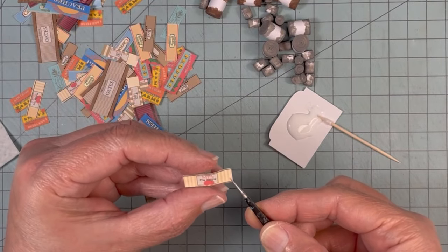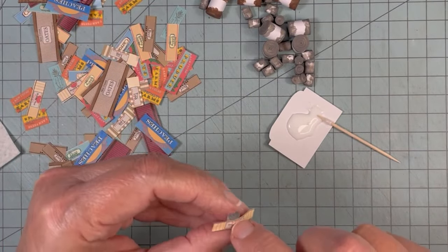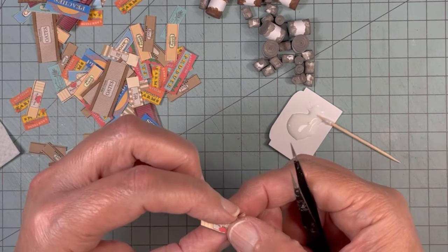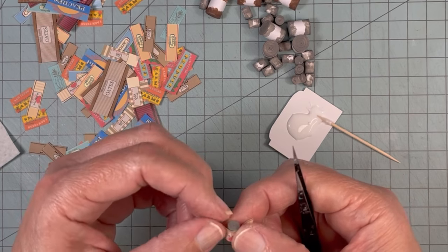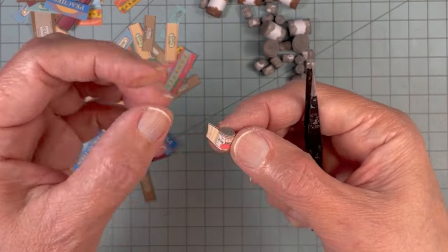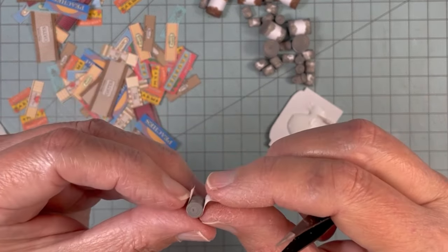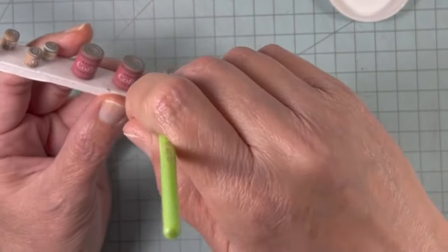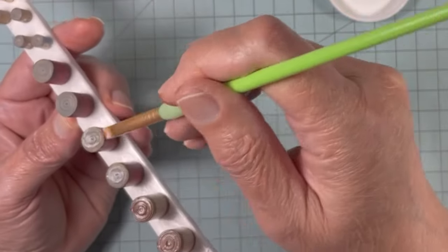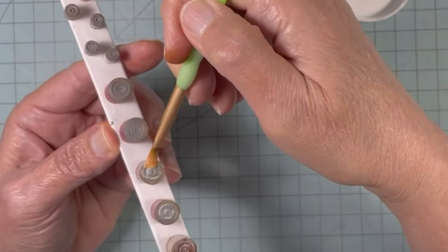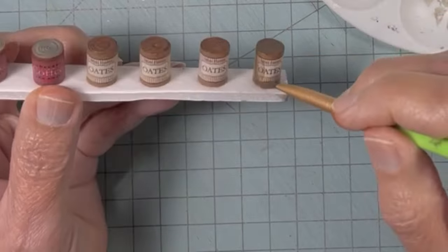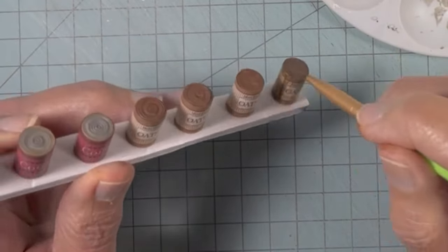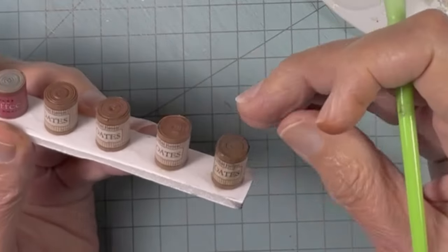I cut all my labels out and then started gluing them on. I gave them a quick thin coat of matte Mod Podge, followed by a brown paint and water wash. I didn't paint the bottoms with Mod Podge or the wash.